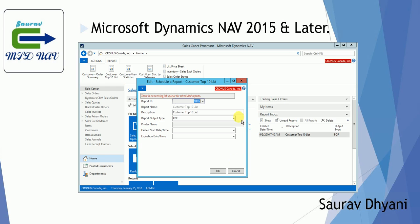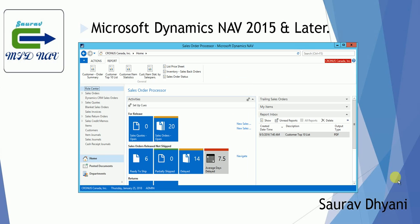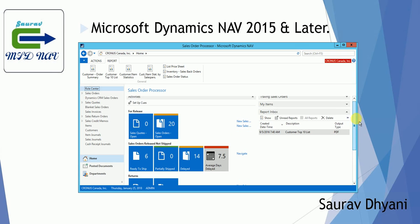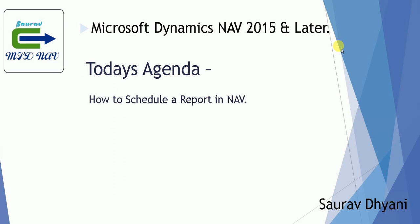Once you schedule a report and the execution is over, you get the output in the Report Inbox section on the Role Center page. All reports that are scheduled will be visible to the user who scheduled them. I hope this helps whenever you encounter a long-running report. Let me know your views in the comments, do like, share, and subscribe — that's all for today, see you next time.